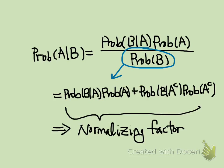The denominator, probability of B, is also known as the normalizing factor because it normalizes the fraction into the range between 0 and 1. You can actually see that the denominator is the summation of all the possible numerators. Bayes' theorem is very useful when the posterior probability is difficult to compute. For example, given a length of hair, what's the probability that the person is a woman?